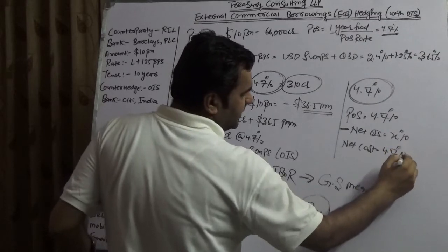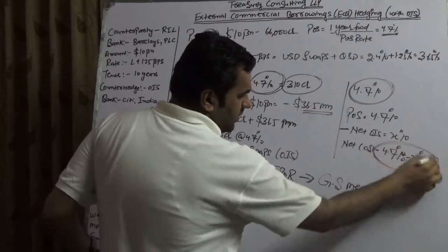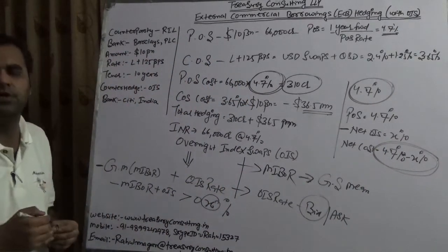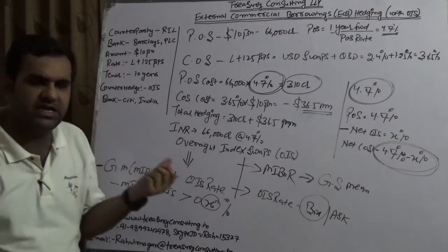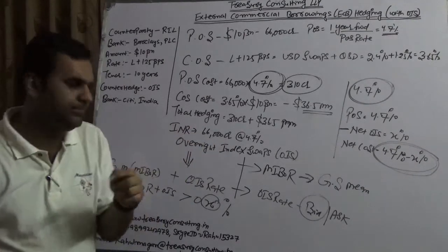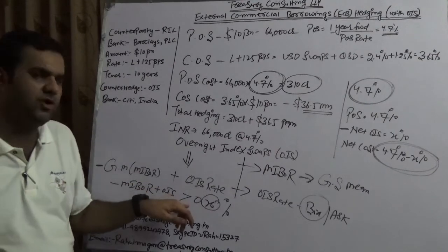If you are thinking what would happen if Reliance would lose, there is no problem. If Reliance would lose, then they can change their view and they can cancel this OIS and they can go on the other way. When they would be going the other way, they would be receiving the MIBOR and they would be paying the OIS.